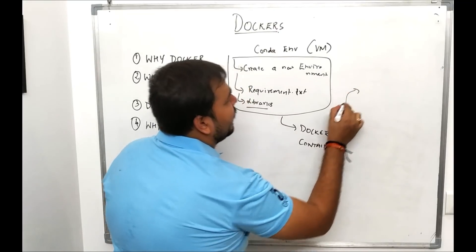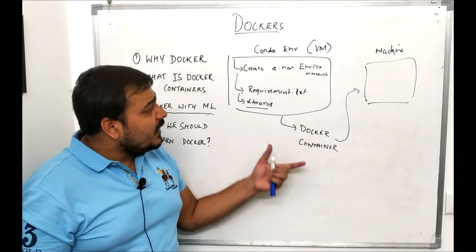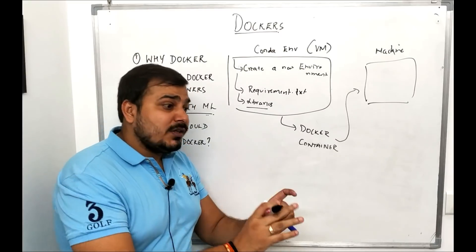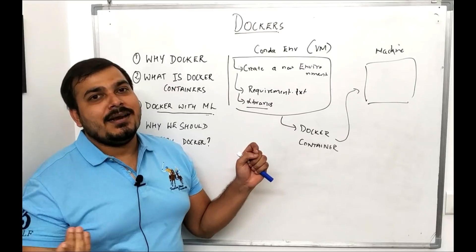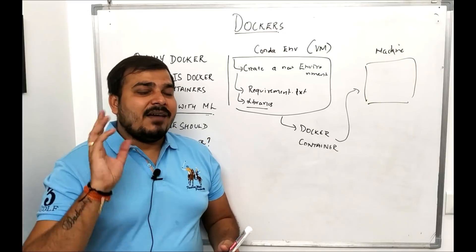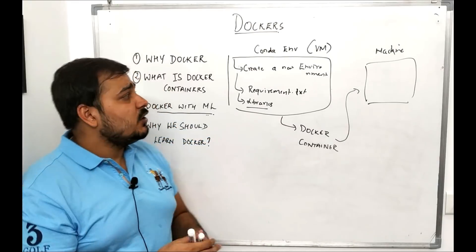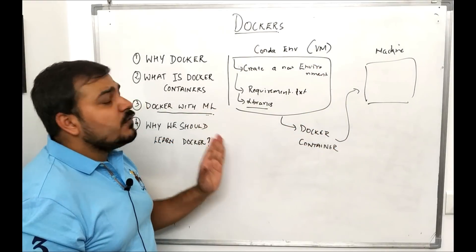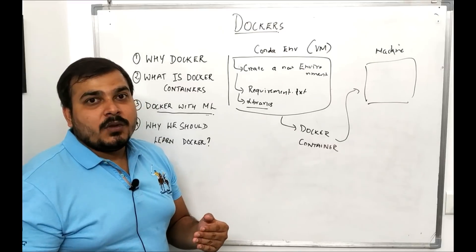That Docker container can then be deployed into any machine. Every time you create a new project and a new conda environment — say one with TensorFlow less than 2.0 and another with TensorFlow greater than 2.0 — and even if you have all the code on GitHub with a requirements.txt file, people still face issues replicating the environment locally. In those cases we should use Docker. I'll show you all these techniques and how to develop at a production level.